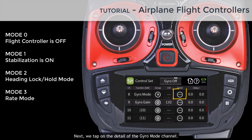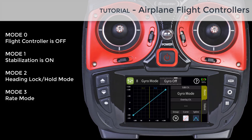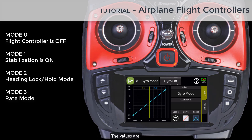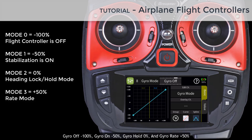Next we tap on the detail of the gyro mode channel. The screen shows us a linear curve between minus 100 and plus 100 percent. Changing flight modes from the radio is done by changing the curve value so that the flight controller will know which mode it needs to enable. The values are: Gyro Off minus 100%, Gyro On minus 50%, Gyro Hold 0%, and Gyro Rate plus 50%.